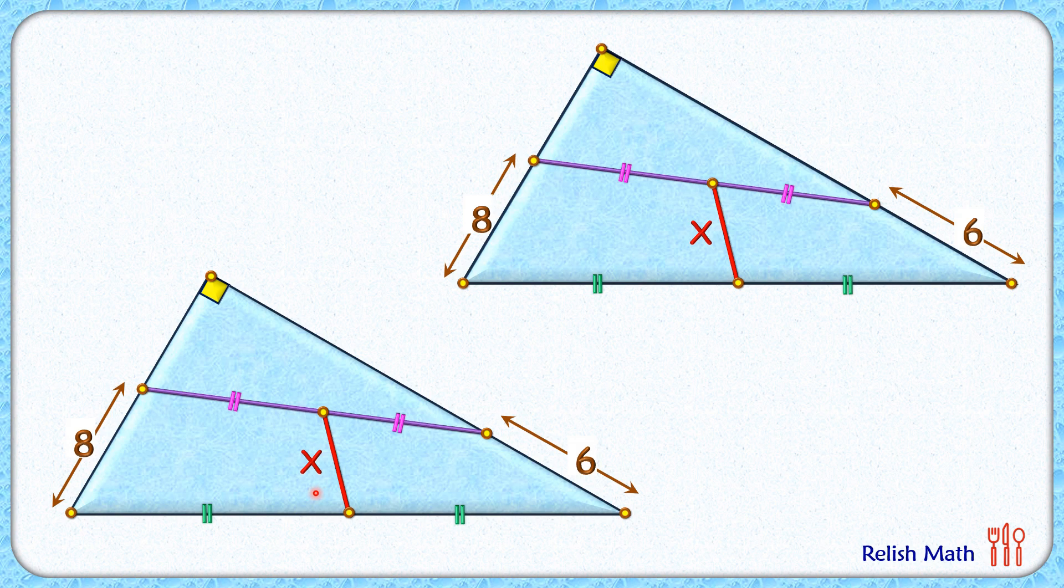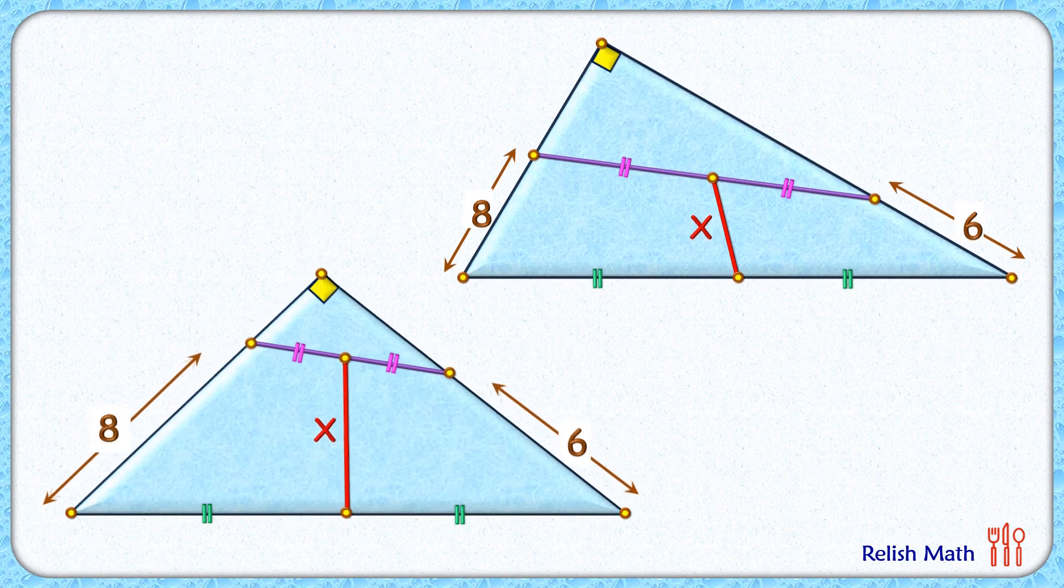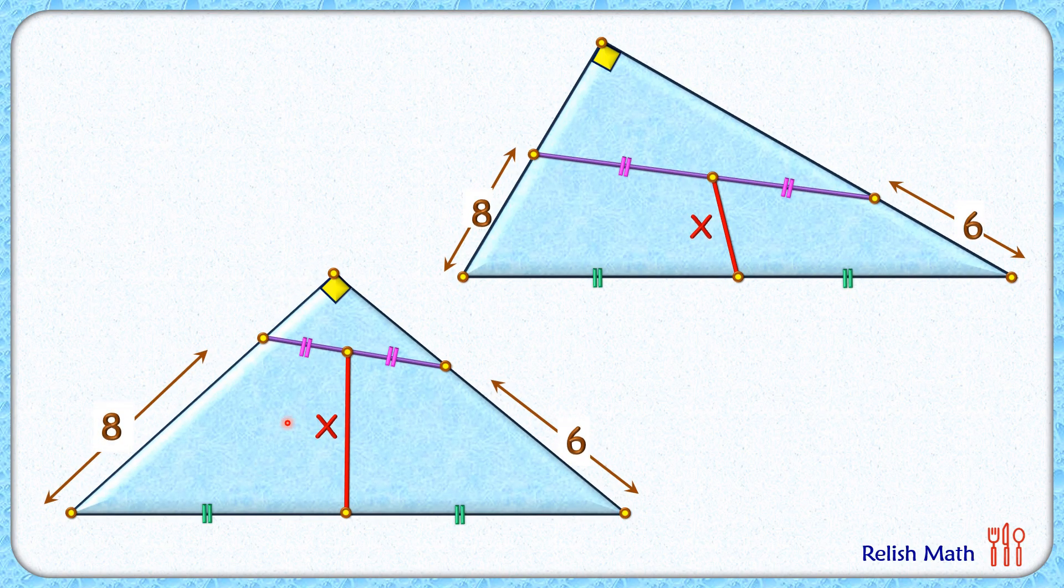Otherwise our question itself will become invalid. So let's change this figure slightly. Now this figure meets all the original conditions of the question. So whatever value of x we are getting in this original figure will be the same as the value we are getting in this new figure.